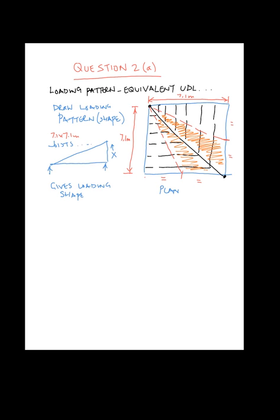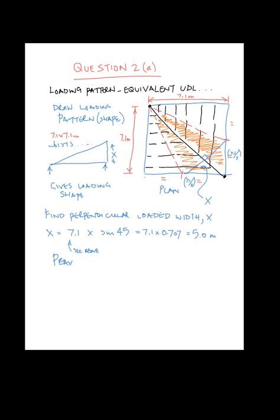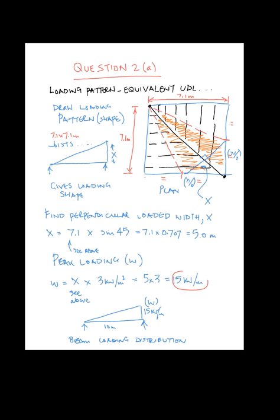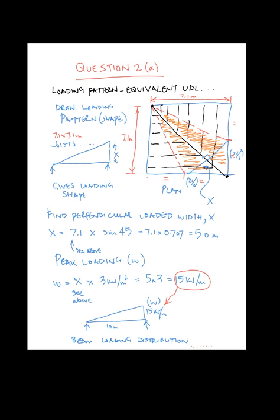The actual load is the perpendicular distance to the beam. So you calculate the value x. And this perpendicular loaded width is 7.1, which is the length, times 2 times sin 45, which comes out at 5 meters. And the peak loading comes out at x times 3kN per meter squared, which is 5 times 3 and comes out 15kN per meter. So the loading distribution is 15kN per meter as a peak.